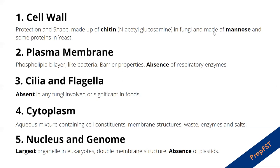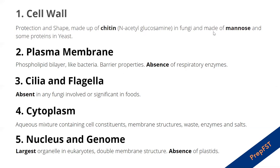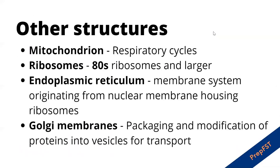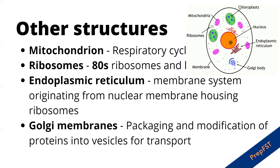The cytoplasm is an aqueous mixture containing cell constituents, waste, enzyme salts, and additionally the specialized membrane structures unique to eukaryotes. The nucleus is the largest organelle in eukaryotes and is a double-membrane structure. In eukaryotes, there are no plasmids. The mitochondrion carries out the respiratory cycles and houses the respiratory enzymes. Ribosomes here are 80S type and are larger compared to prokaryotes. There is endoplasmic reticulum, a membrane system originating from the nuclear membrane that houses ribosomes, and finally the Golgi apparatus, responsible for packaging and modification of proteins into vesicles for transport in the cytoplasm.